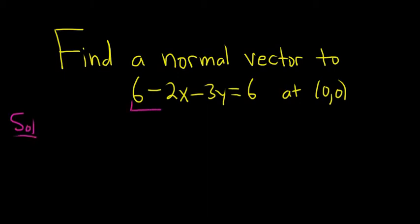So we can think of this as a function of two variables, f of x, y. And so the question can be rephrased as find a normal vector to the level curve given by f of x, y equals 6 at 0, 0.